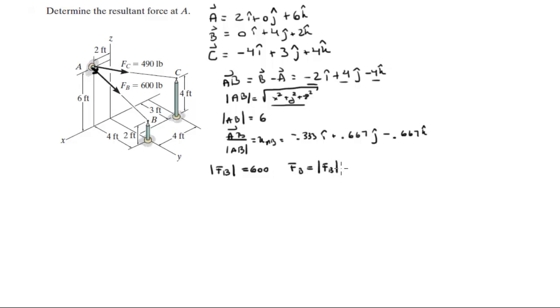So the magnitude times the unit vector along AB will give you the Cartesian vector form of FB which comes out to be negative 200i plus 400j minus 400k.